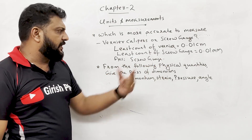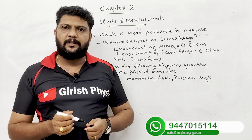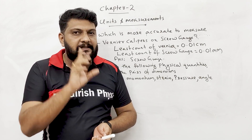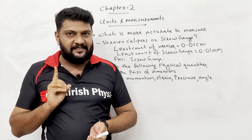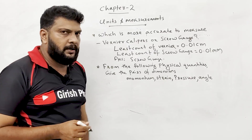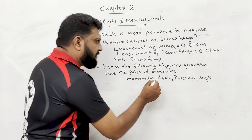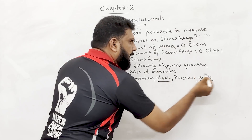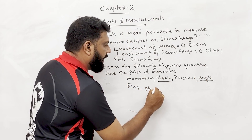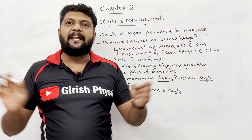Question: From physical quantities, find pairs with the same dimensions. Given options: momentum, strain, pressure, angle. Strain and Angle both have no dimensions — they are dimensionless quantities. So strain and angle form a pair with the same dimensions.